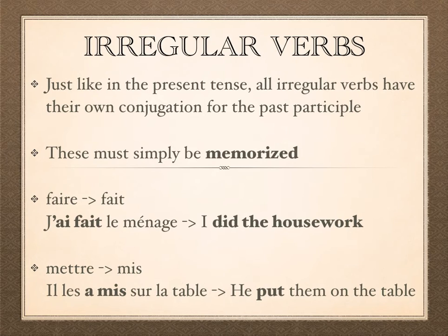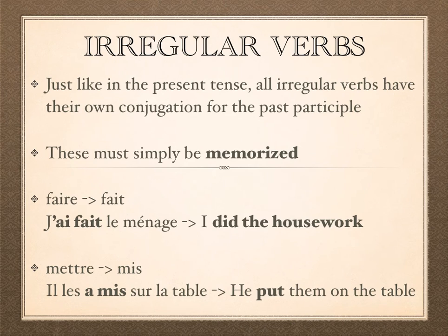So today we talked about our first two. The verb faire, meaning to do or to make — the past participle is going to be fait. For example, the sentence j'ai fait le ménage means I did the housework.